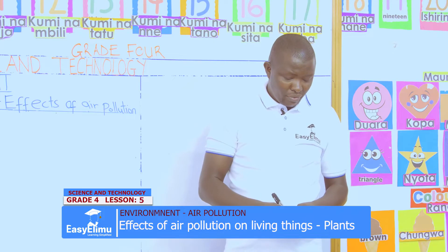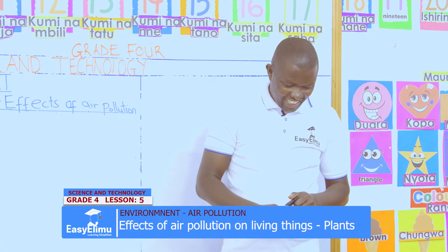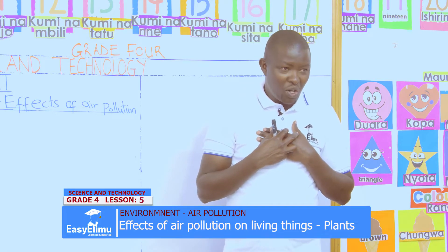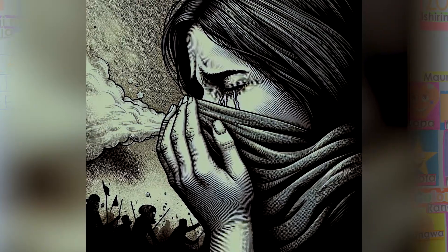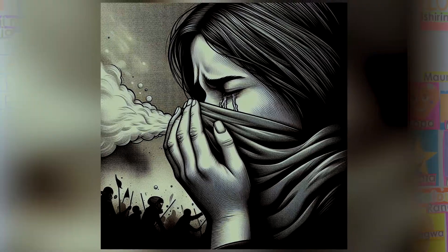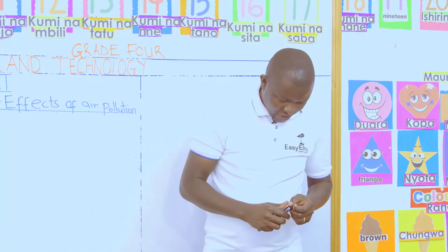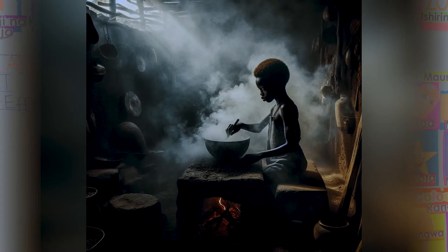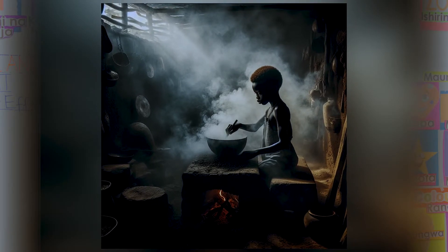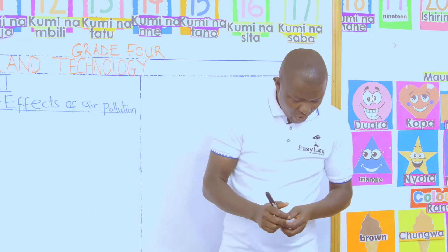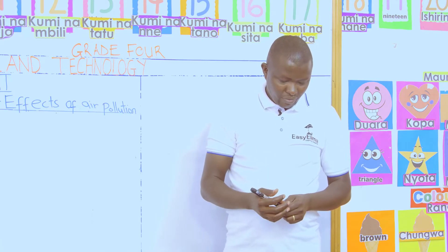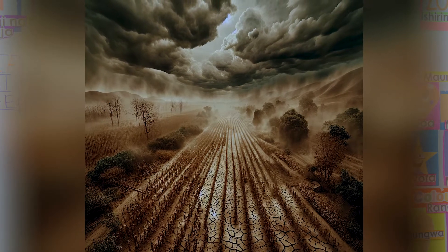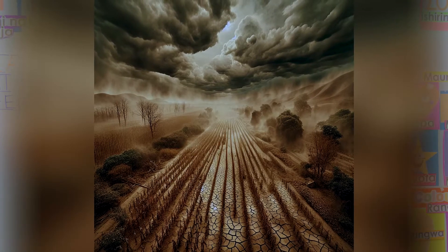From picture 1, what can you see Victoria? A lady who has been choked by the smoke. That is correct. In picture B, Tom, what can you see? A boy who has been choked by smoke from the cooking. That is correct. And Victoria, what can you see in picture C? Plants which are choked by the dust — all the leaves are full of dust. That is correct.